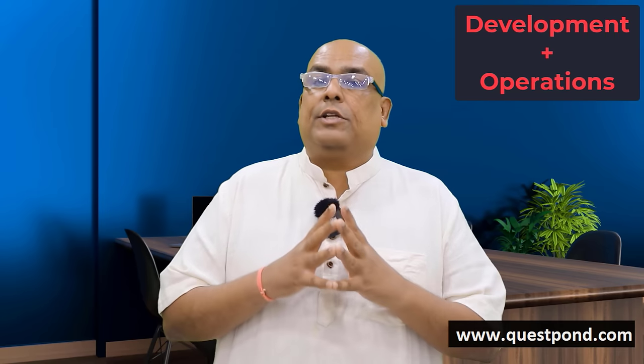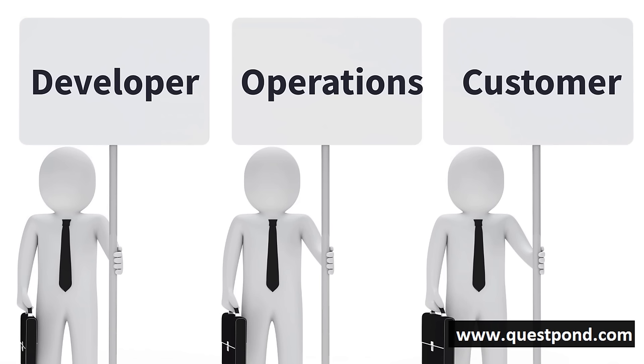Now let us start with the second step — the 'why' of DevOps. In order to understand this, let us understand who the majority stakeholders are in software development. There are three: first, the developer who develops the software; second, operations who take the software, help the customer, make it live, and give support; and third, the customer who wants smooth software delivery.